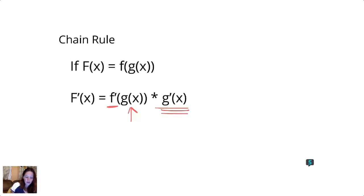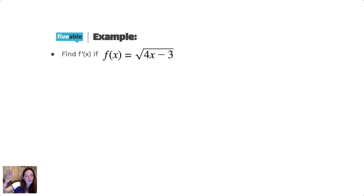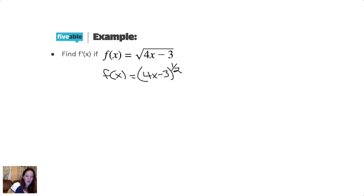That's actually a pretty simple process. Let's try it with an example: find f prime of x if f of x equals the square root of 4x minus 3. The first thing you want to do is identify what's the outside function and what's the inside function. The outside function is that square root, but since roots and powers are the same thing, I'm just going to change this to 4x minus 3 to the one-half power, because then I know how to take the derivative.